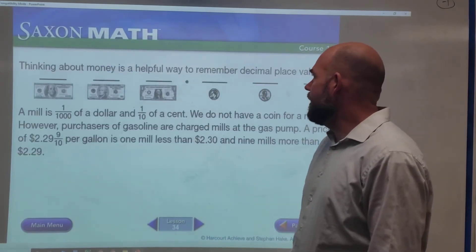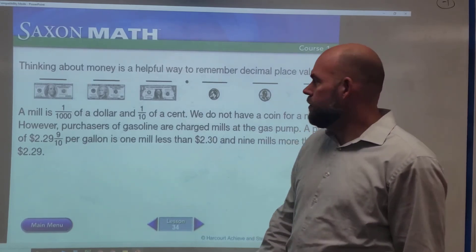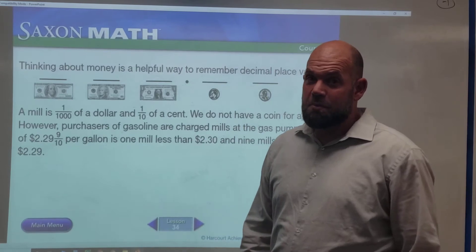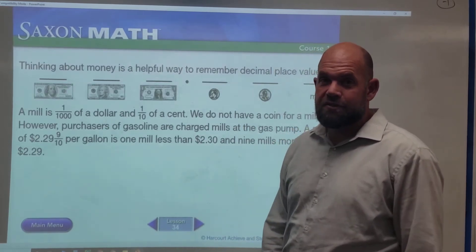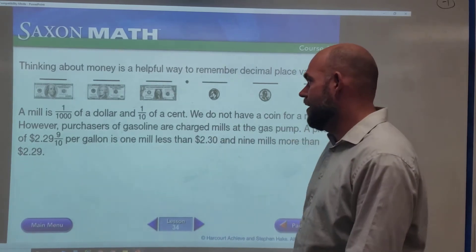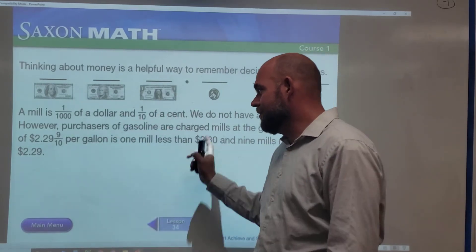Thinking about money is a helpful way to remember decimal place value. They include the mill here, and honestly that's not going to help me remember decimal places because usually when we deal with money we're just dealing with cents, which is up to the hundredths place. A mill is a thousandth of a dollar.